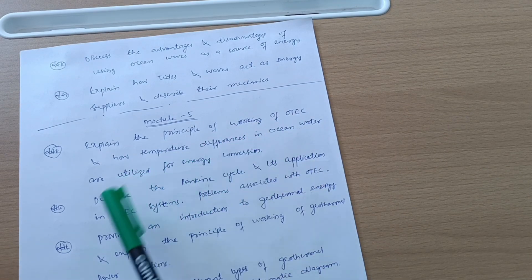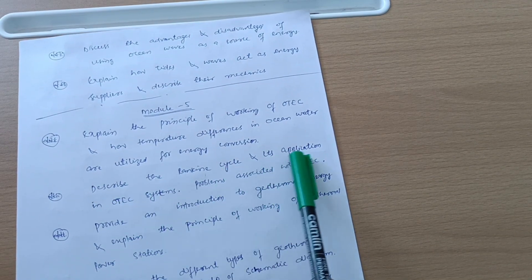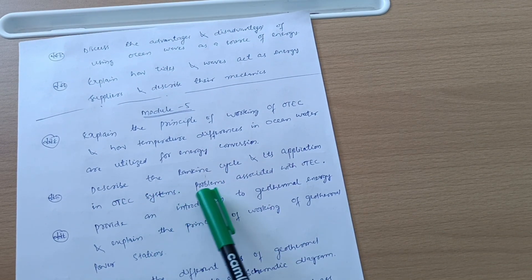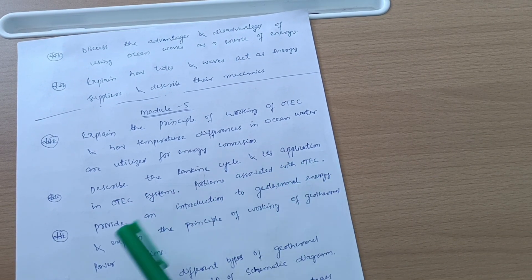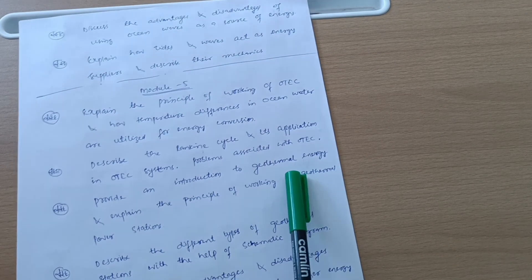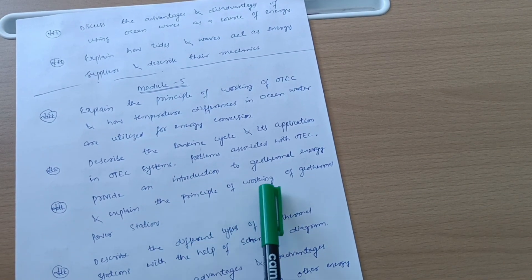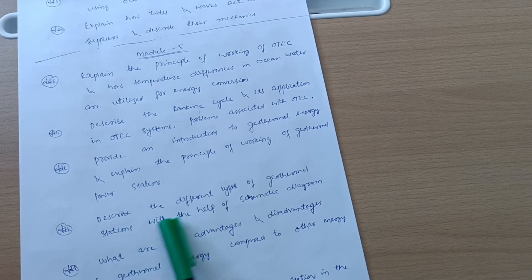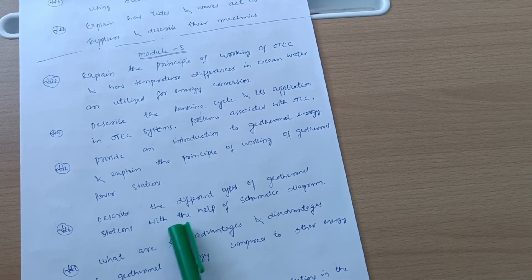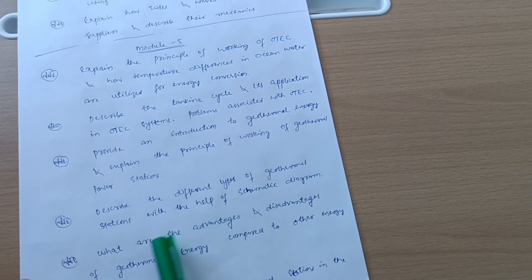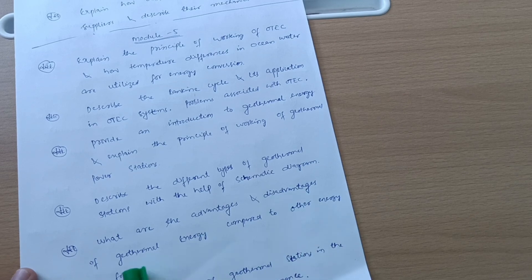Module 5, we have six questions: Explain the principle of working of OTEC and how temperature differences in ocean water are utilized for energy conversion. Describe the Rankine cycle and its application in OTEC systems. Problems associated with OTEC. Provide an introduction to geothermal energy and explain the principle of working of geothermal power stations.